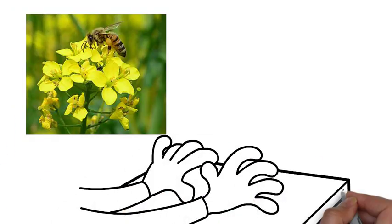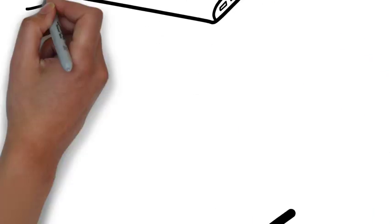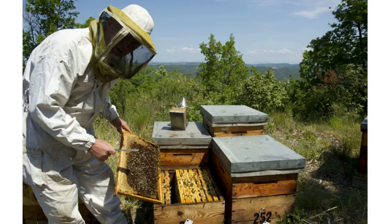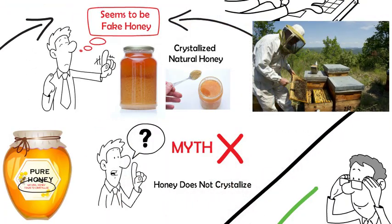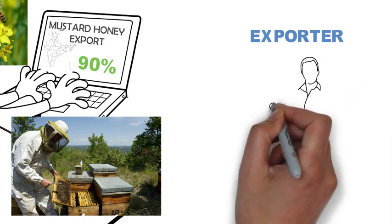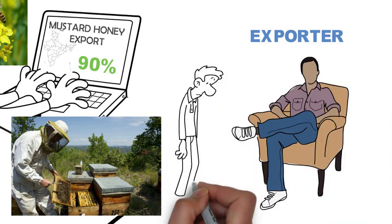According to the recent data, more than 90% of mustard honey produced in India is exported. The beekeepers who extract this highly beneficial honey find it hard to sell it to the consumers because of the prevailing myth about crystallization. Therefore, the only choice left for them is to sell this honey to the exporters at low prices.